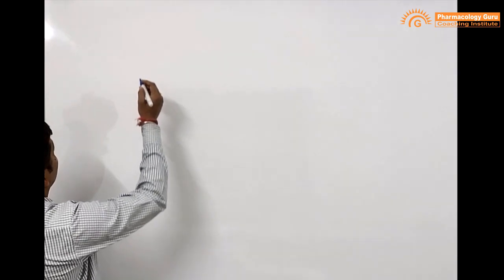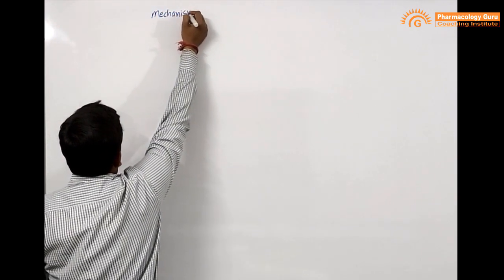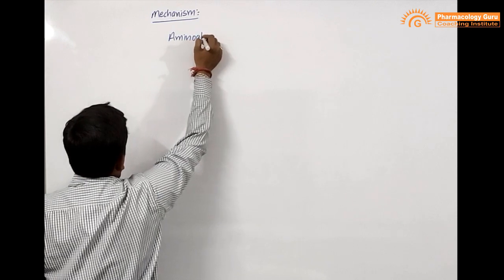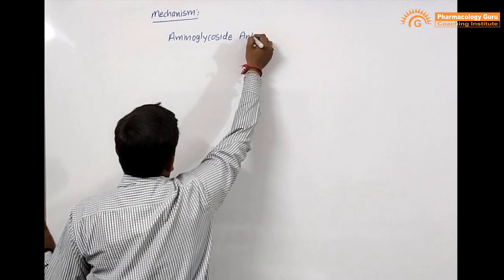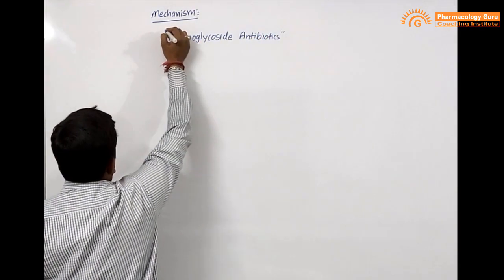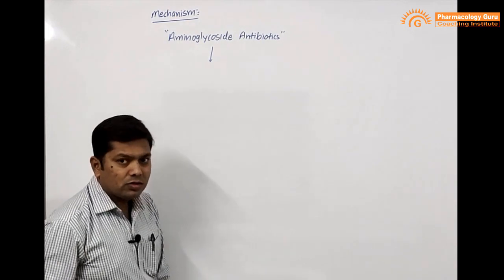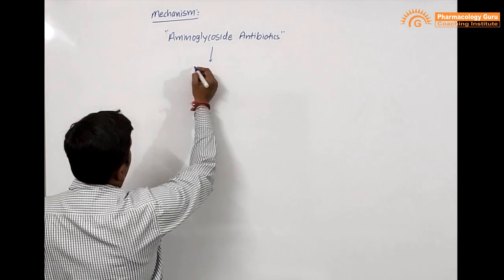Good morning friends, today we are going to see the mechanism of action of aminoglycoside antibiotics. Aminoglycoside antibiotics act on gram-negative bacteria, so their spectrum of activity is gram-negative. They first enter into the bacterial cell.